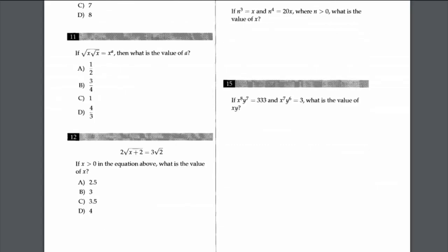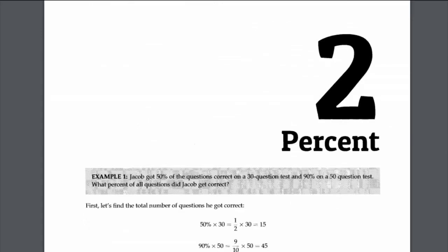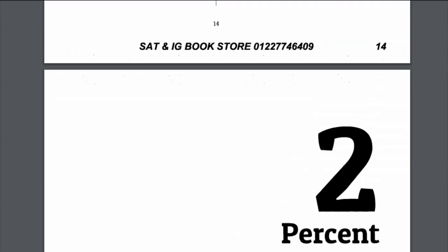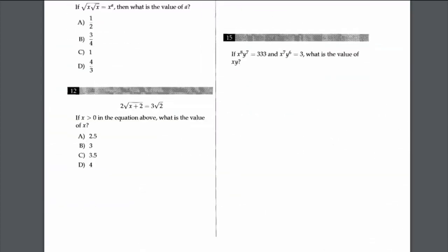If x to the power of 8 times y to the power of 7 equals 333, and x to the power of 7 times y to the power of 6 equals 3, what is the value of xy? Dividing the first equation by the second gives xy = 333 divided by 3 = 111. See you soon in the second lesson — let's prepare percent. Hope you're all in good health, take care, bye everyone!